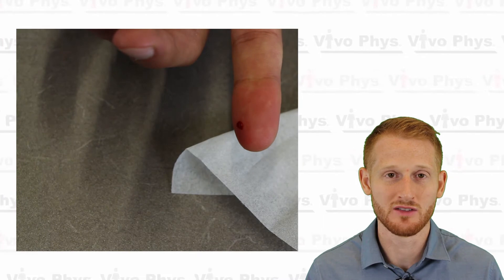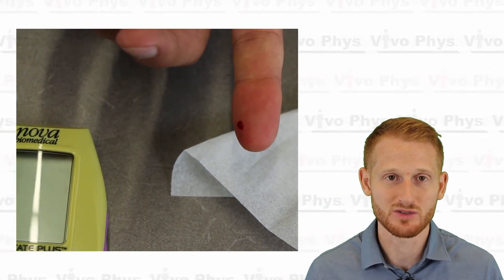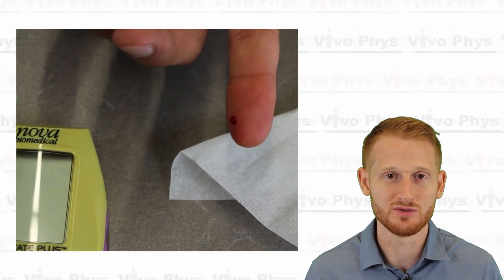Once you have done that, you've wiped away that first drop of blood, squeeze another drop of blood out and then you're ready to use that drop of blood. So the reason we wipe the first drop of blood away is because it's going to have a little bit of alcohol residue in it and that can mess with some of the measurements that you might want to do.